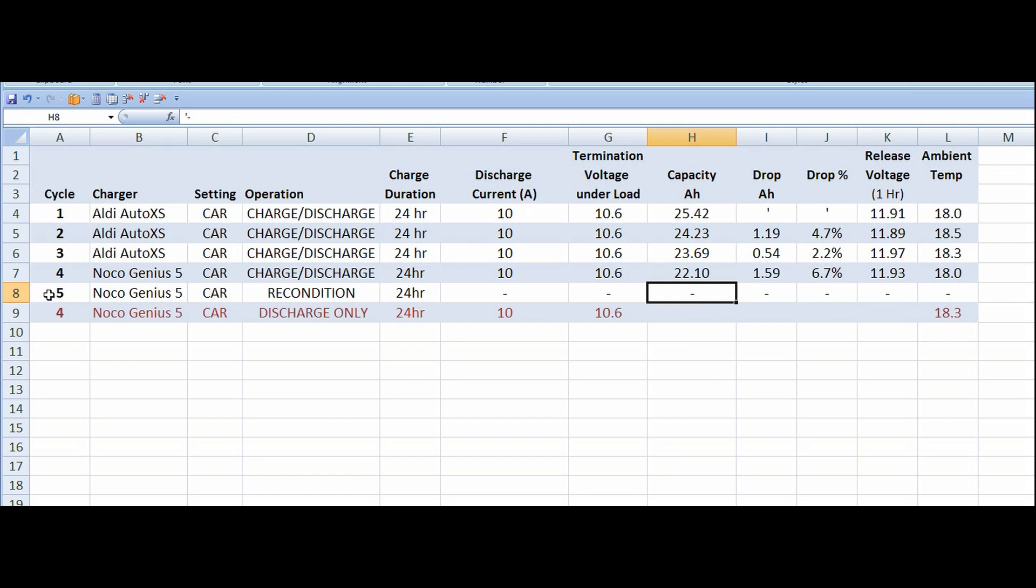So anyway, we're on step five at the moment. I'm just going to switch back to the scope in a minute and show you what the reconditioning signals are from the charger. And then afterwards, we'll do the cycle number six, I should say, which will be the repeat this cycle four of the same discharge, same conditions. And let's see what capacity we get. Let's see if it's improved the battery at all in terms of the amp hour capacity. We're not talking about the cold cranking amps or anything else. We'll have to do another test on that. But this is the progress so far.